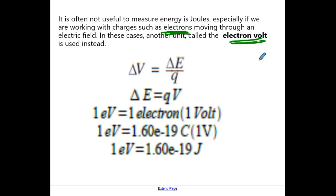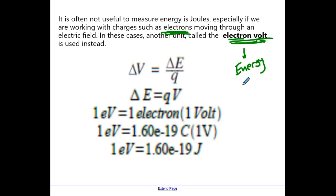The electron volt is a bit of a misnomer — a lot of people think it's a voltage, but it is not. An electron volt is a measure of energy. It is the energy required to move an electron through one volt of potential. This is a very similar concept to light years: a light year is actually a measure of distance — it's how far light travels in a year — and similarly, an electron volt is not a voltage, it's energy.